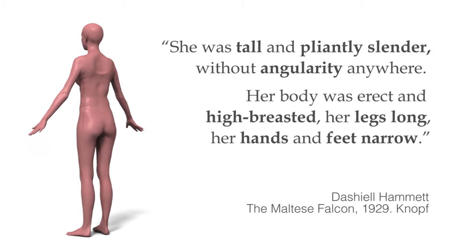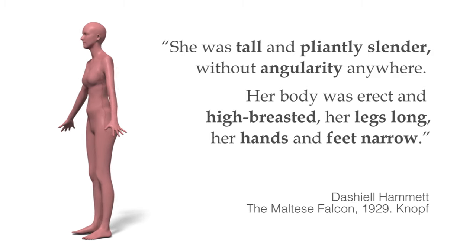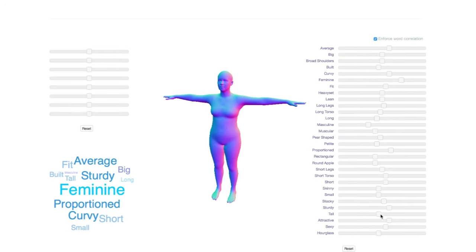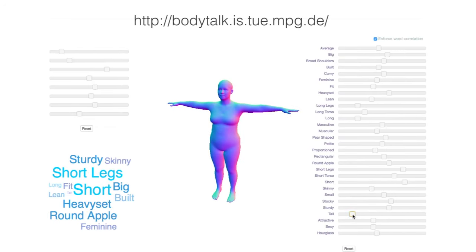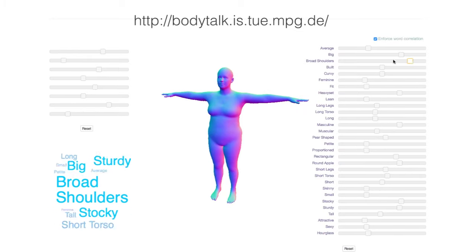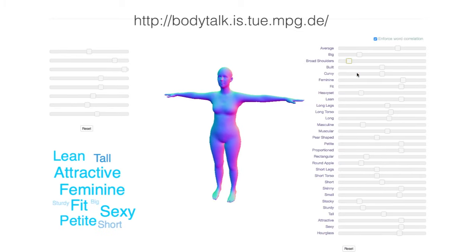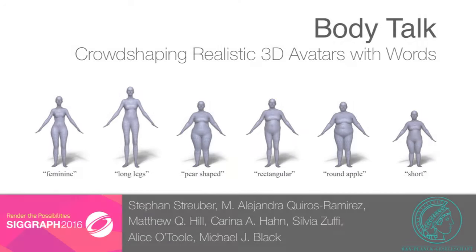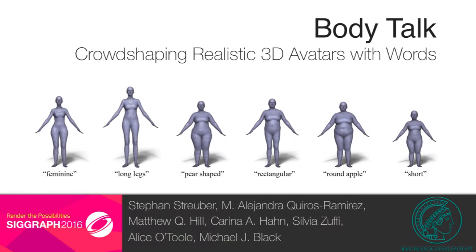BodyTalk uses verbal descriptions to create 3D avatars by leveraging crowdsourced ratings of 3D body shapes. Our results suggest that humans maintain a veridical representation of 3D shape, and can make the transformation from images to this representation and from the representation to a linguistic description. Because it requires no 3D scanner, BodyTalk could make 3D bodies more accessible for online shopping, games, and fitness applications.